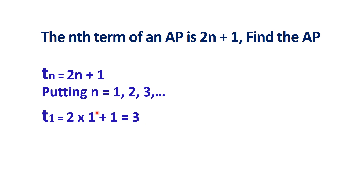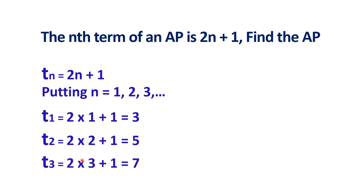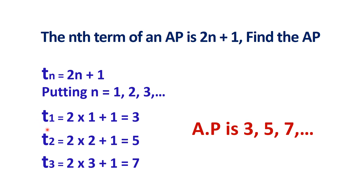Taking n as 2, T2 equals 2 into 2 plus 1, which is 4 plus 1 equals 5. Taking n as 3, T3 equals 2 into 3 plus 1, which equals 7. So the arithmetic progression is 3, 5, 7, ... where 3 is T1, 5 is T2, and 7 is T3.